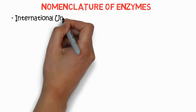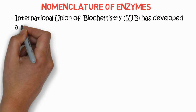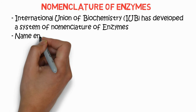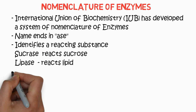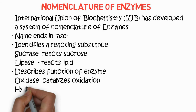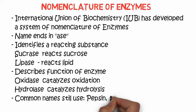Regarding nomenclature of enzymes, the International Union of Biochemistry (IUB) has developed a system of nomenclature where the enzyme name ends in '-ase'. It is usually identified by the reacting substance — for example, sucrase reacts on sucrose, lipase reacts on lipids. It can also describe the function of the enzyme, such as oxidase catalyzing oxidation or hydrolase catalyzing hydrolysis. Common names such as pepsin and trypsin are still used.